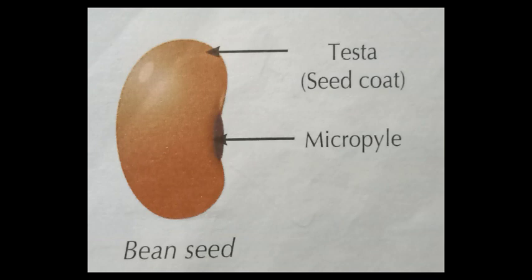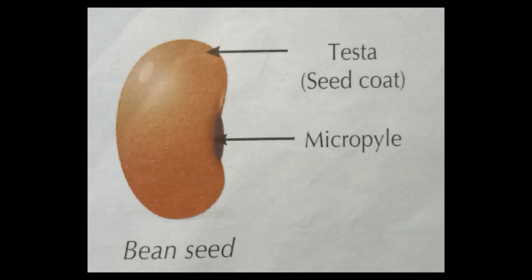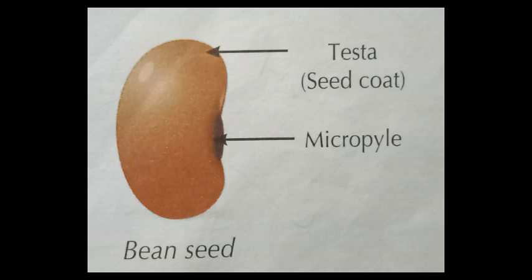Most plants are grown from seeds. Flowers change into fruits, and fruits have seeds inside them. Seeds grow into new plants. Now let us learn about the structure of a seed. As you can see in the picture, a seed has an outer covering called a seed coat or testa. The function of the seed coat is to protect the baby plant inside — just as a jacket protects our body from cold, rain, or dust.